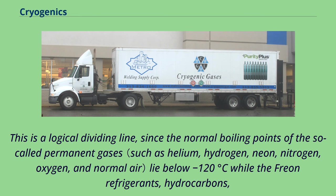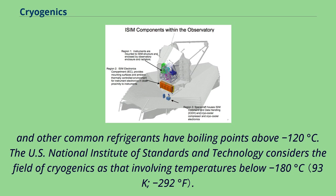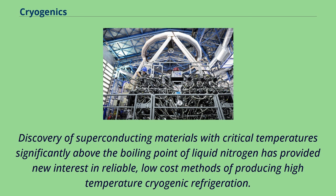This 120K threshold is a logical dividing line, since the normal boiling points of the so-called permanent gases lie below minus 120 degrees Celsius, while Freon refrigerants, hydrocarbons, and other common refrigerants have boiling points above minus 120 degrees Celsius. The U.S. National Institute of Standards and Technology considers the field of cryogenics as that involving temperatures below minus 180 degrees Celsius.